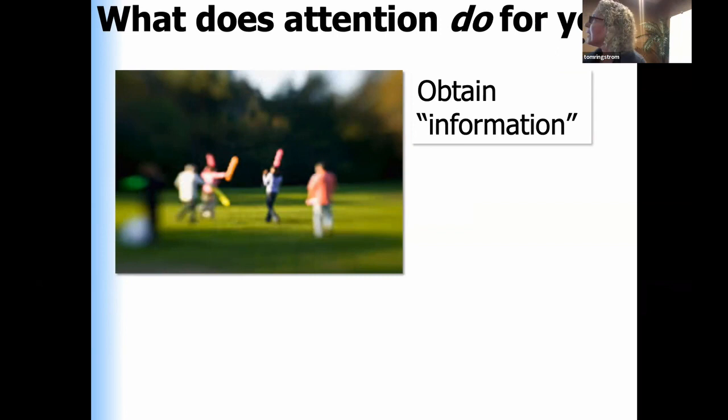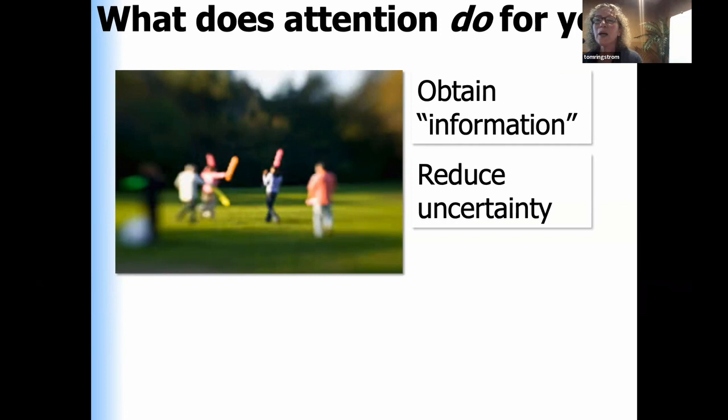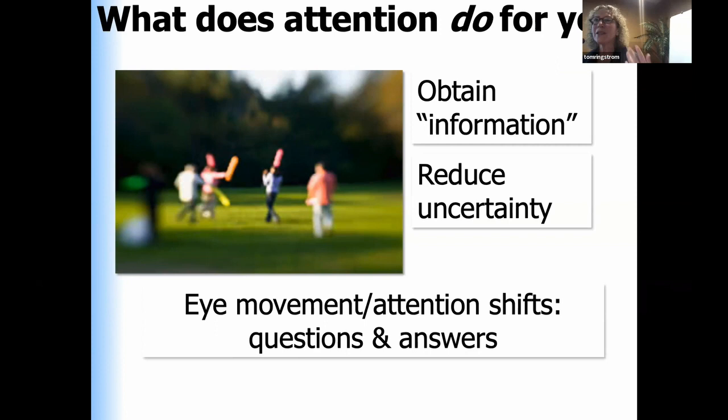Information in a technical sense is a reduction of uncertainty. We think about eye movements as a sort of interrogation strategy. An eye movement is a question you pose to the world and also an attempt to answer that question with a specific answer.